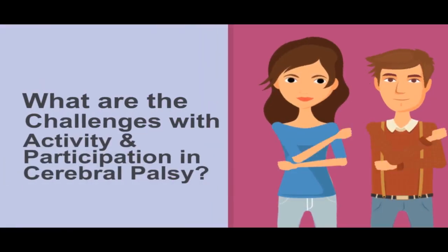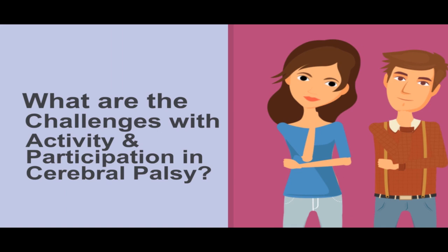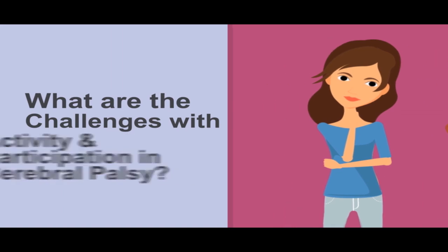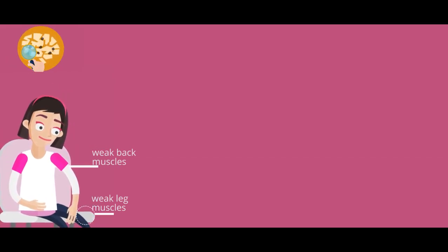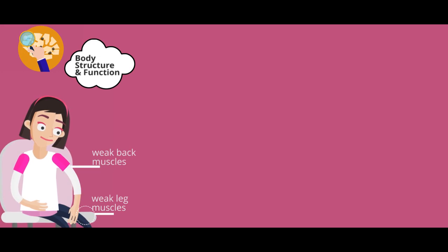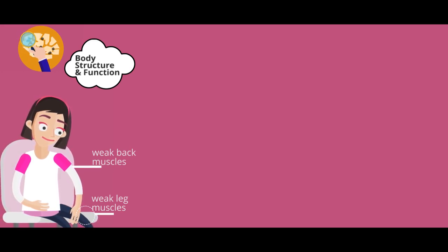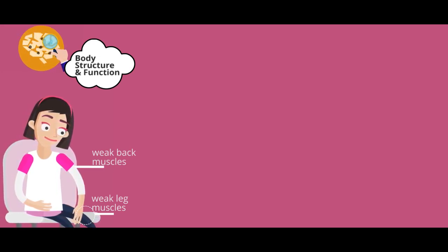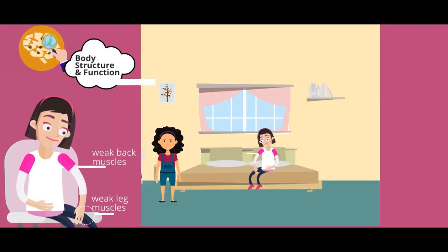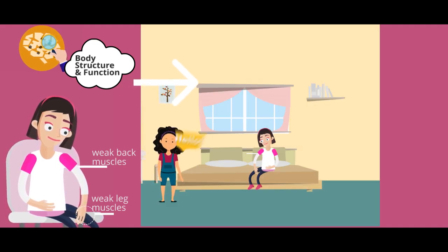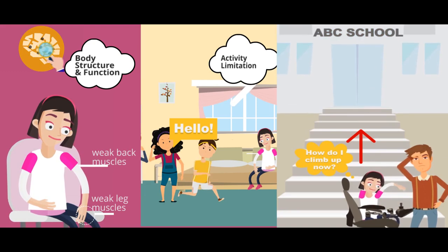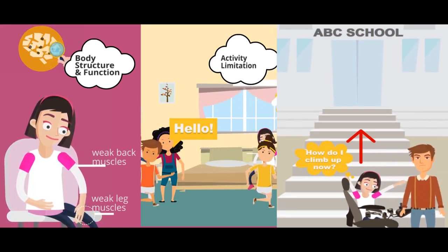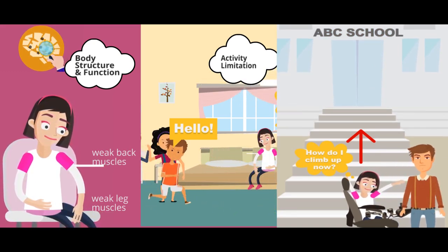What are the challenges with activity and participation in cerebral palsy? To better understand this, let us meet Sarah. Sarah has weak leg and back muscles and impairment to the brain, which presents body structure and function challenges. These challenges make walking and talking difficult for her — this is called activity limitation in ICF. The activity limitation leads to her non-participation in social activities like going to school, which is called participation restriction in ICF.